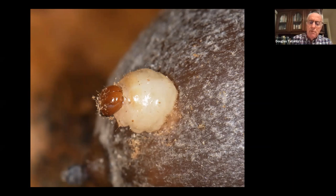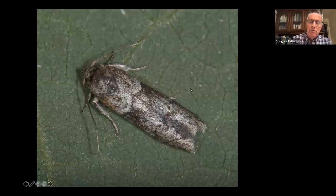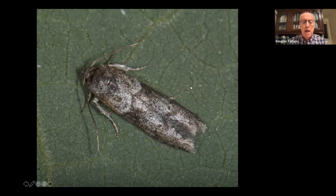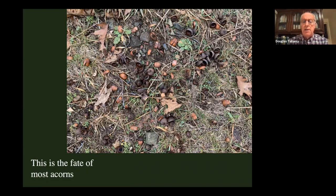The acorn weevil larva tunnels out of an acorn. There's also a group of moths called acorn moths — several species that develop inside acorns. After a few weeks on the ground after the acorns have fallen, most acorns are gone — crushed, eaten, not much left.